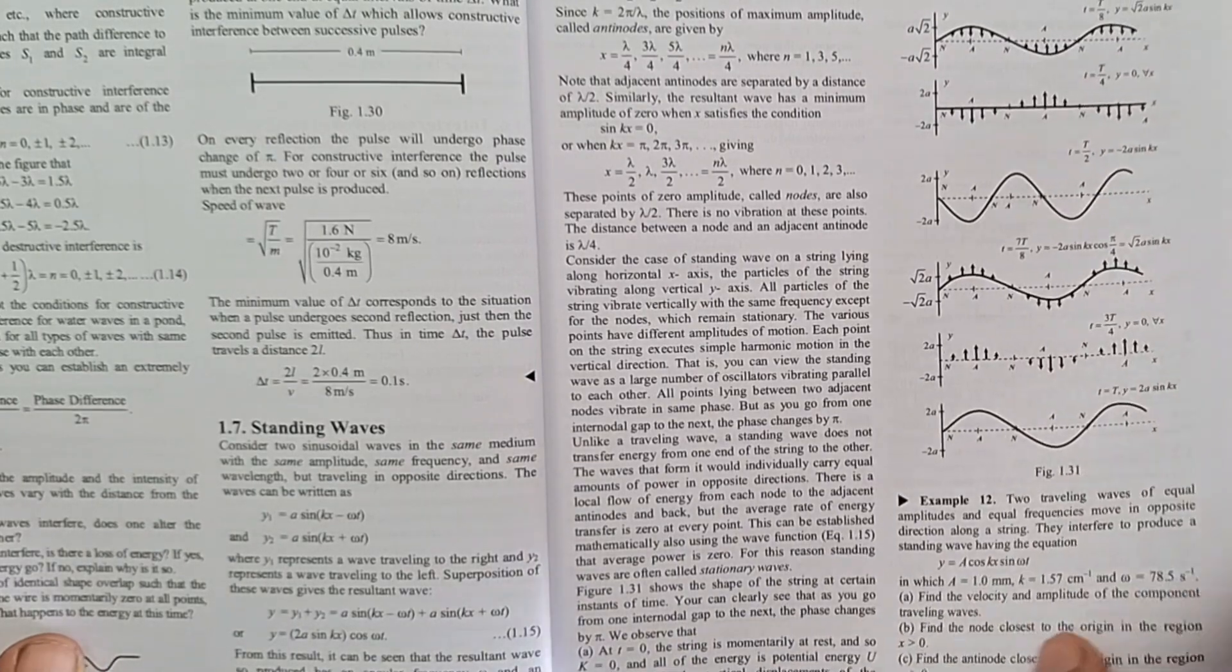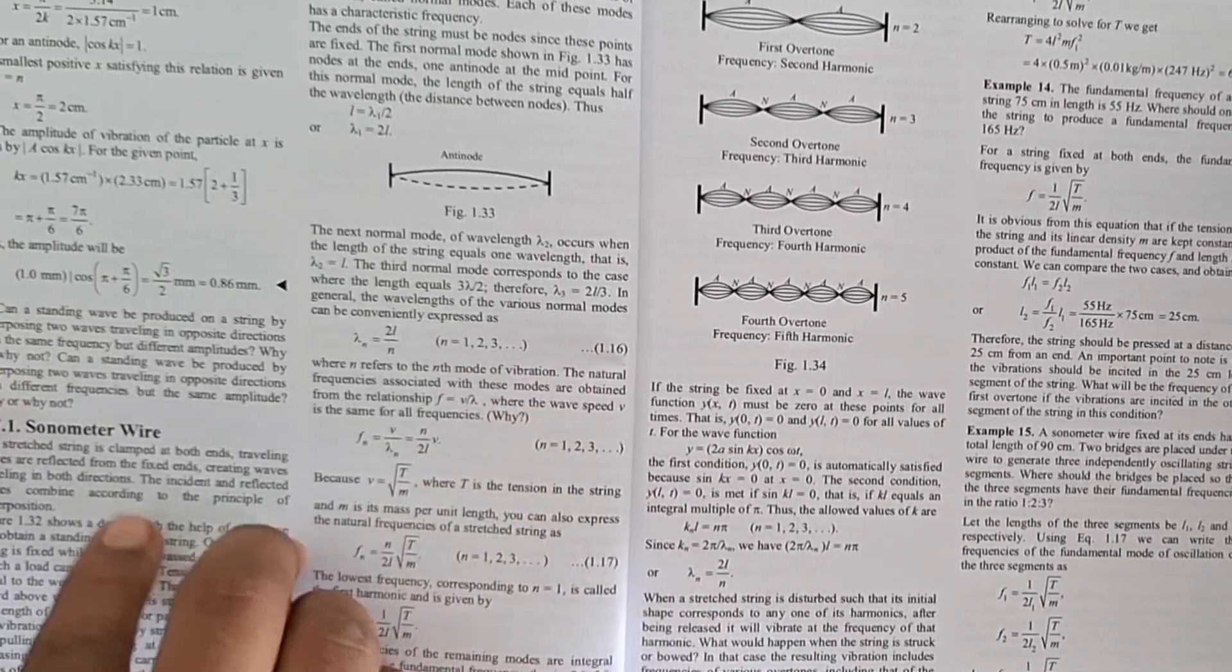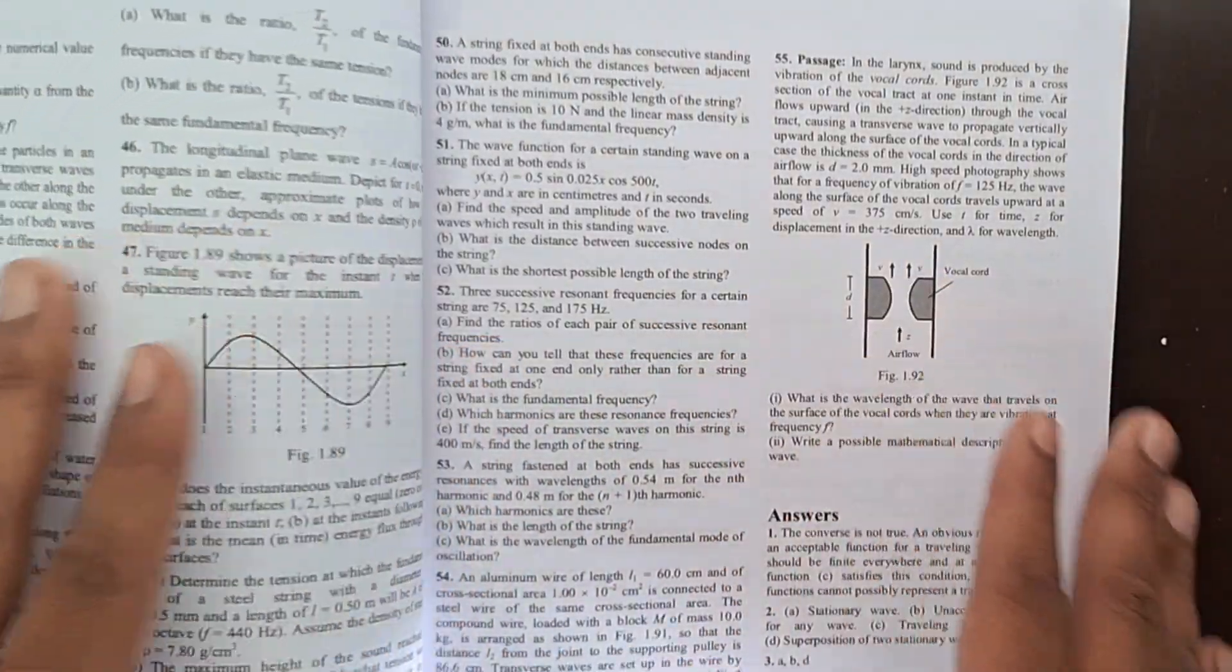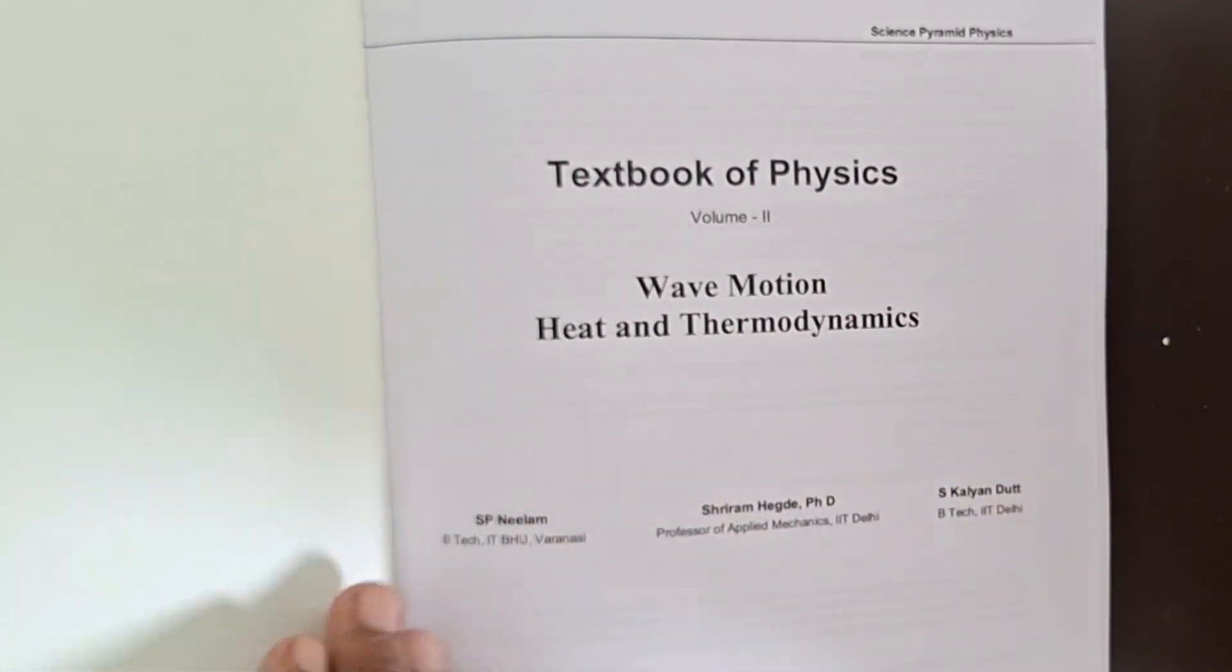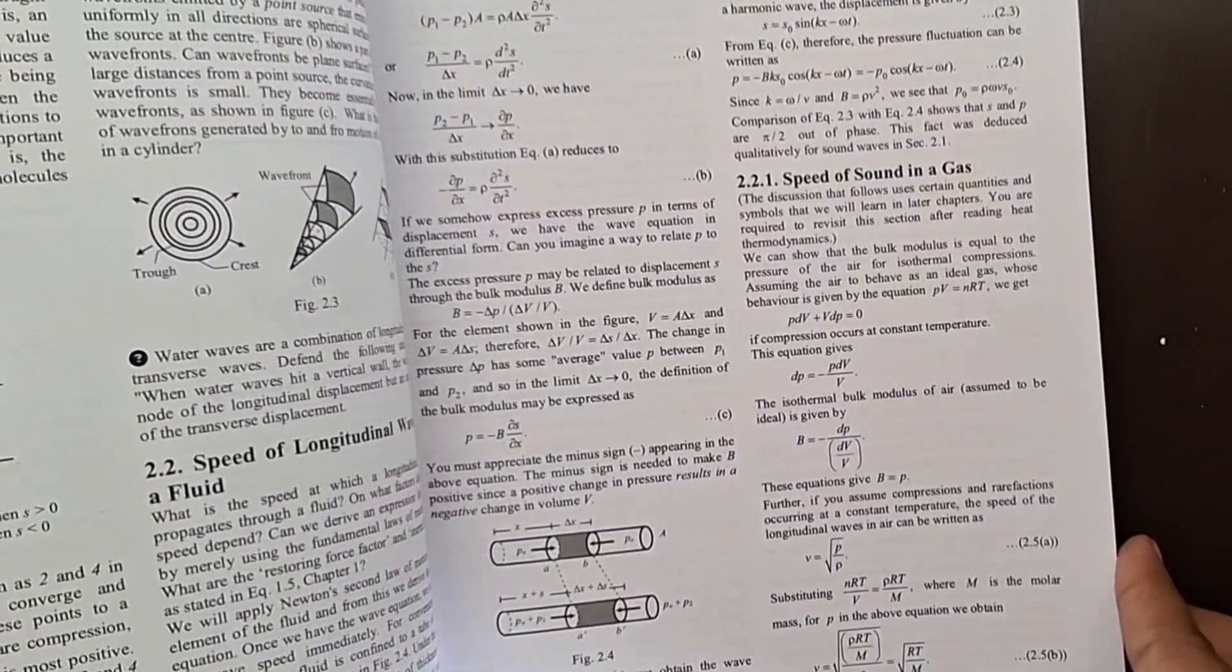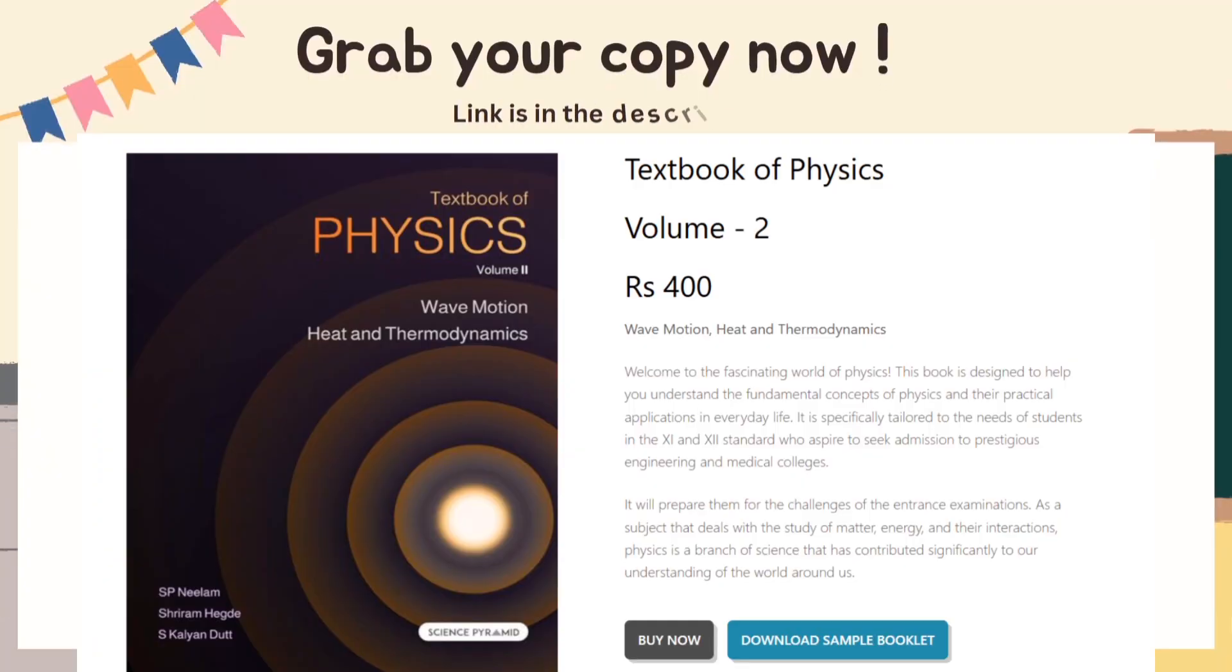Textbook of Physics Volume 2 is not just for scoring marks, it's for those who want to fall in love with physics again, and if you let it, it will change the way you see the subject forever. I have been exploring this gem, Textbook of Physics Volume 2, Wave Motion, Heat and Thermodynamics by Science Pyramid, and let me tell you, this is not just another thick book with equations and problems. This book talks to you. Whether you are preparing for IIT JEE, NEET, Physics Olympiads, or Class 11th and 12th CBSE board examination, this one is built for you. If you are serious about mastering the concepts of heat, thermodynamics, and wave motion, and not just about scoring marks but really getting it, this is the book I would recommend with my eyes closed. Grab your copy if you haven't already, and if you have used it, tell me in the comments how it helped you. Don't forget to share this video with someone who is struggling with physics.